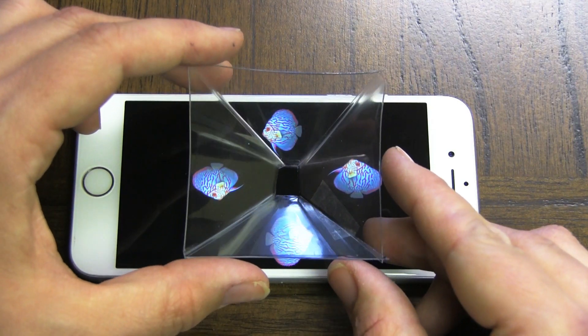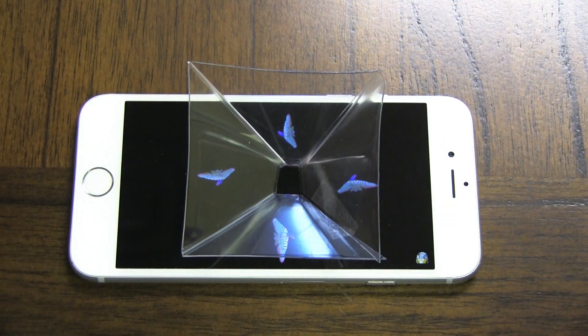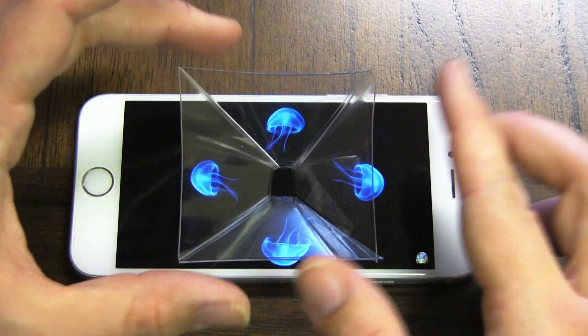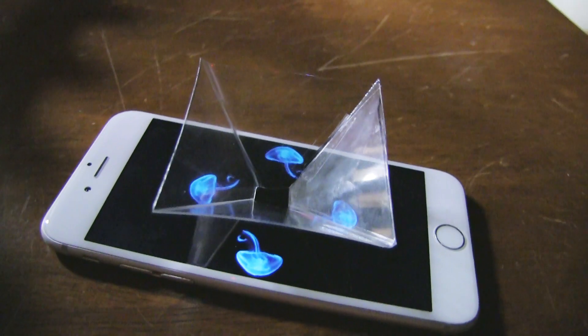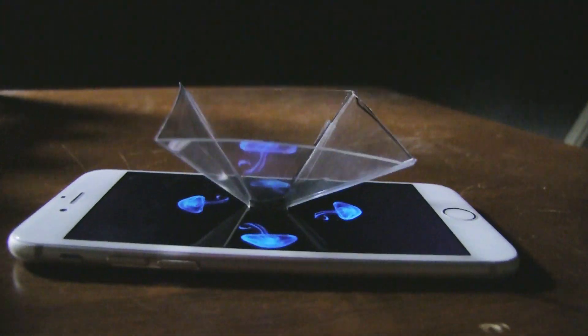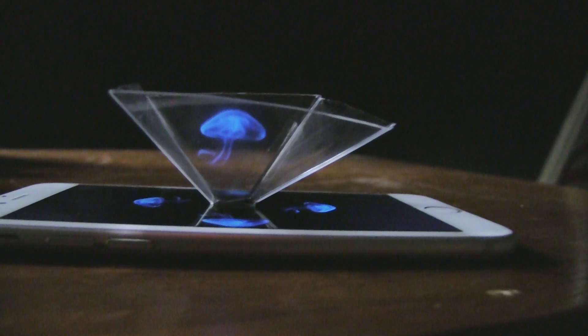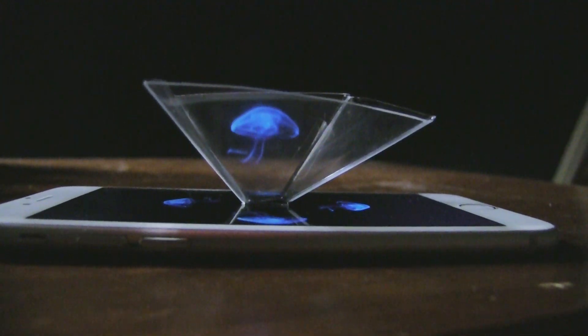Now using your cell phone, you can go on YouTube and there's several hologram videos. Just place your pyramid in the center of your screen, turn off the lights and when you look through the side, tada, you get a 3D hologram image.